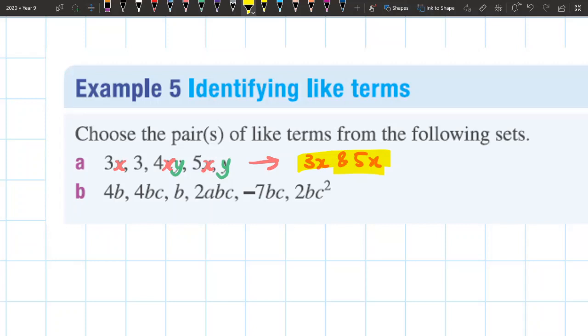I'm going to go through this one a little bit quicker. So I've got 4b. Are there any other terms that just have a b factor in my list? Let's have a look. 4bc, nope, that has a c in it as well. b, yeah, that one just has a b. So this one has the same pronumeral factors. So my first set is 4b and b.